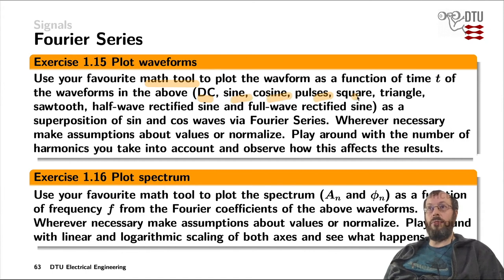Use the Fourier coefficients from the previous slides for the signals: DC, sine wave, cosine wave, pulses, square, triangle, sawtooth, half-wave rectified sine, and full-wave rectified sine as a superposition of sine and cosine waves via Fourier series. You could use 100 volts, 5 volts, 1 volt, 10 millivolts or whatever you like, and normalize the time domain to something you want to work with. Normalize and use some values if you'd like to.